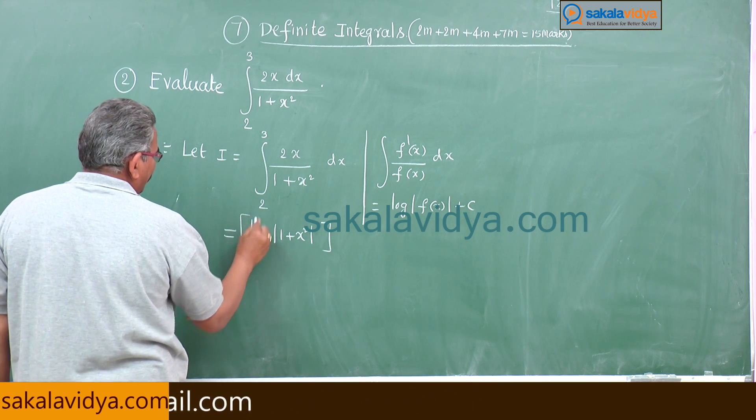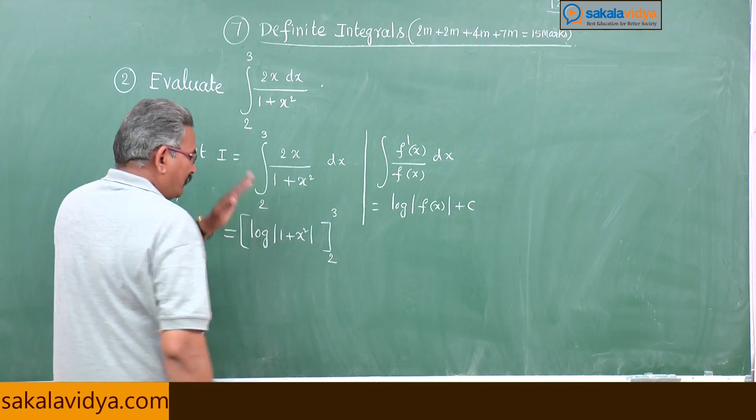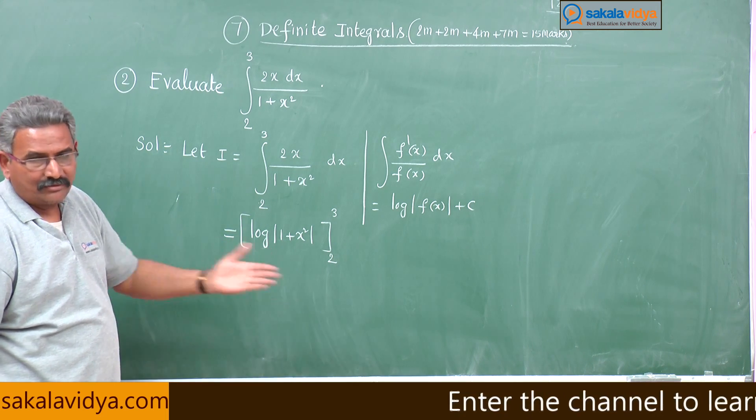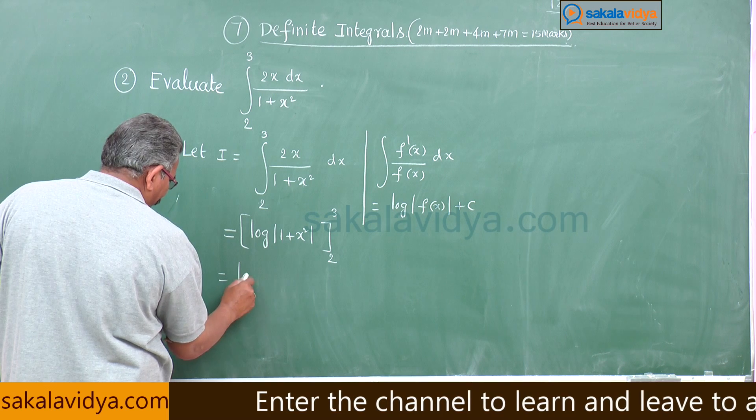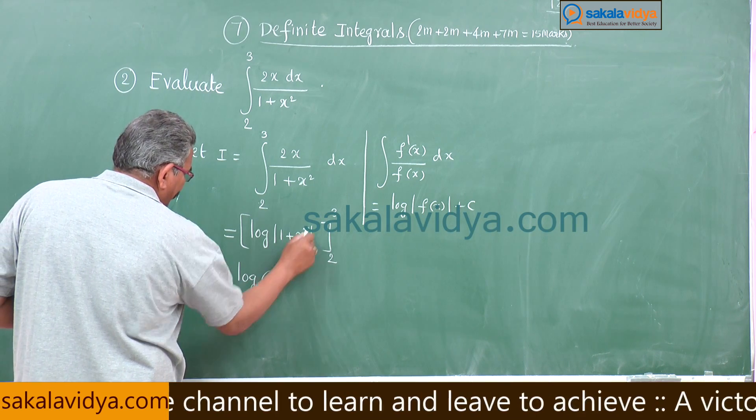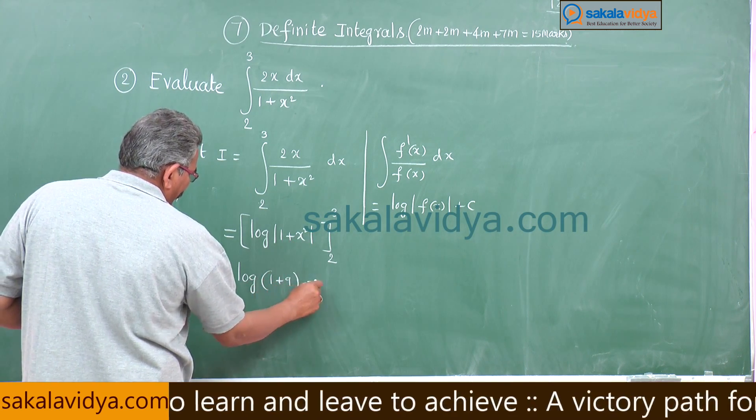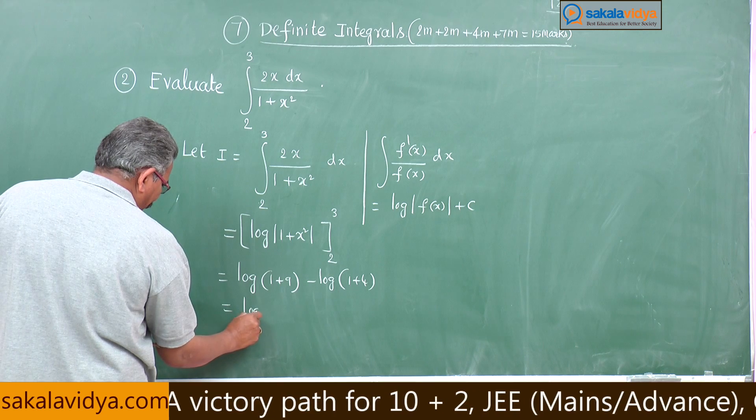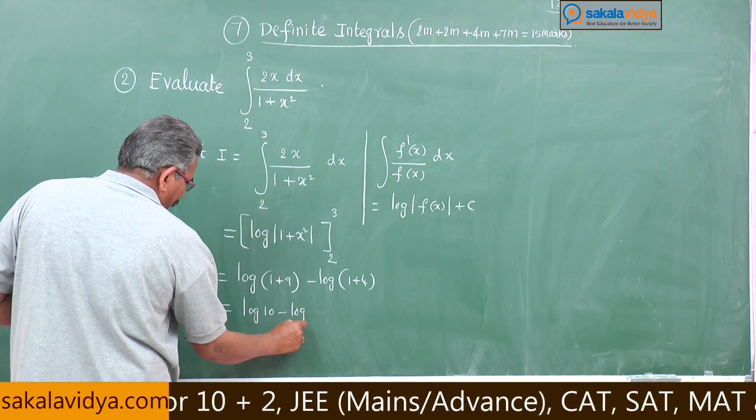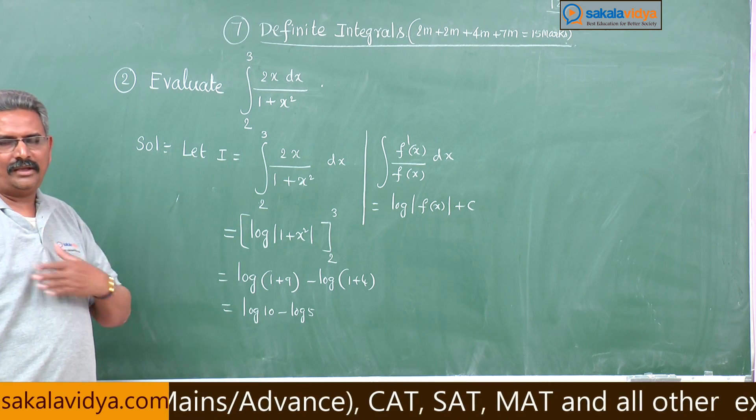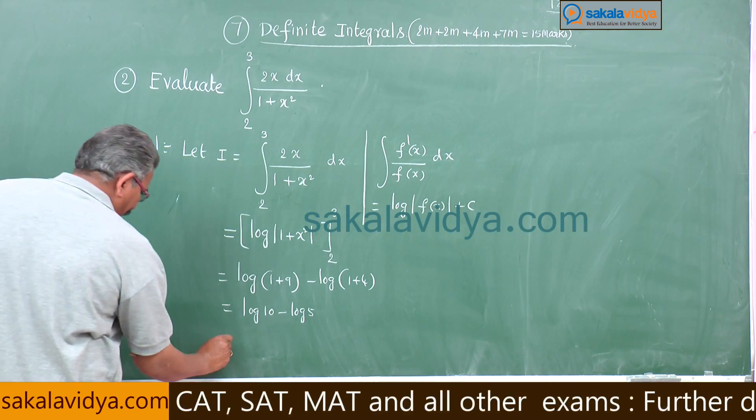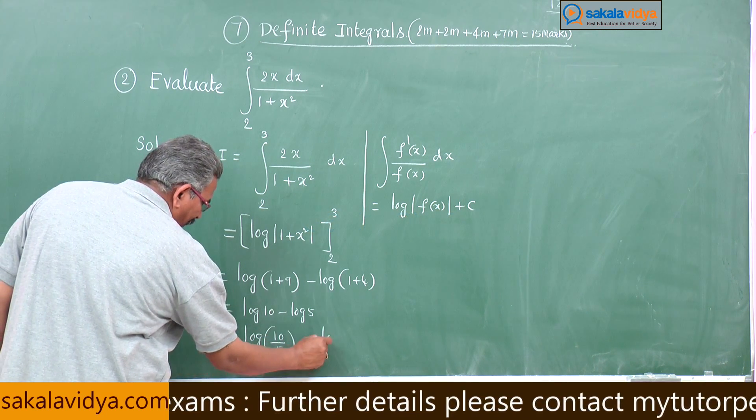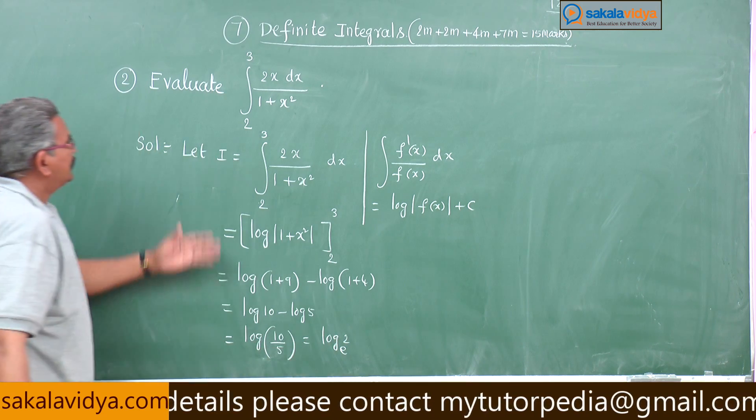Now this is equal to we can write log of mod 1 plus x square, limits here only we write the limits. What are the limits here? 2, 3. First upper limit we have to substitute minus the value at x is equal to 2. We have to write that is log of 1 plus 3 square is 9 minus log of 2 square is 4, log 10 minus log 5. We have simple log formula: log x minus log y is log of x by y. Log of 10 by 5, this is equal to log 2 base e. This is the answer.